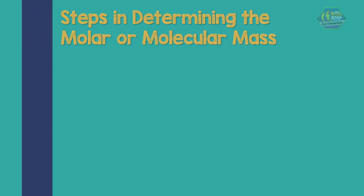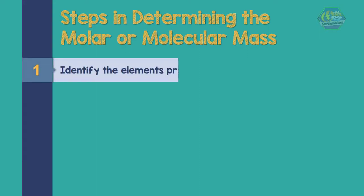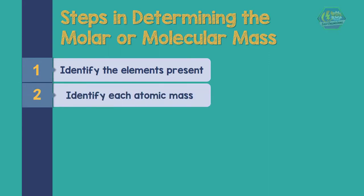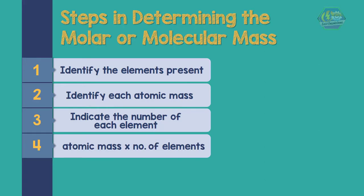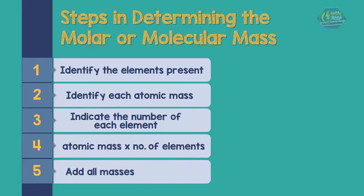To determine the molar mass or molecular mass, let us follow these steps: 1. Identify the elements present. 2. Identify each atomic mass. 3. Indicate how many of each element. 4. Multiply the atomic mass by its number of elements. 5. Add all masses.